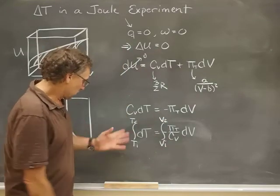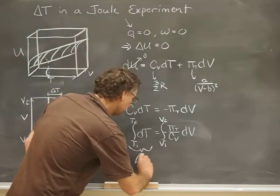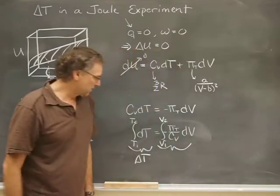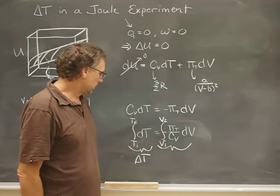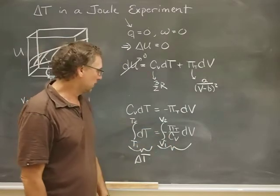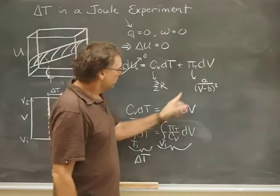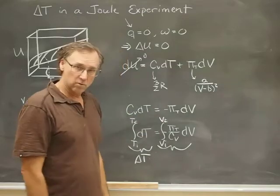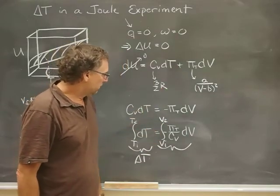Okay, and so this term right here, obviously, will turn into a delta T. All right, and this term right here, well, some things can come out of the integral. The minus sign, obviously, comes out of the integral. Because Cv is a constant, that's again come out of the integral. How about πT? Well, the A can come out, but we still have left in the denominator V minus B, the quantity squared.